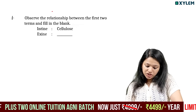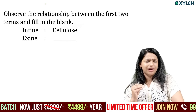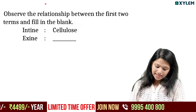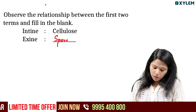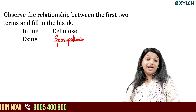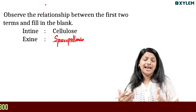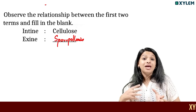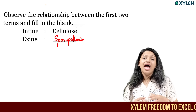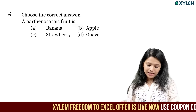Observe the relationship between the first two terms and fill in the blanks. The pollen grain structure is very important. The exine of the pollen grain is made of sporopollenin. Sporopollenin enzymes will be degraded but we will still get it.